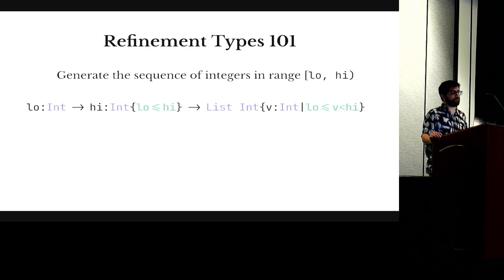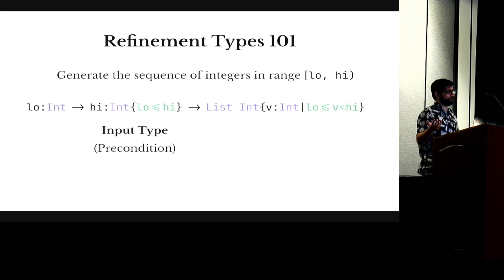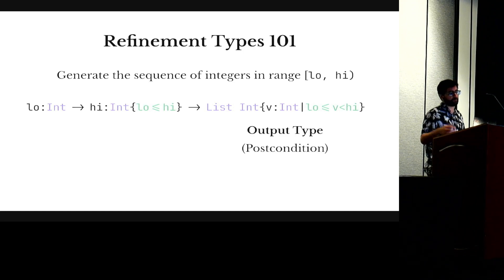So once we have refinements on base values, we can use it to specify the behavior of functions. This is showing the type of a function that generates a sequence of integers within a range. When we use a refinement on an input type, we can specify preconditions. In this case, we're saying that the second argument has to be greater than the first. And when used at the output type, they can be used to specify a postcondition. In this case, that all the elements in the list are within the range.